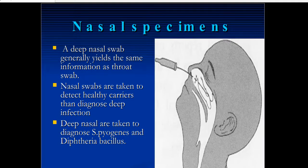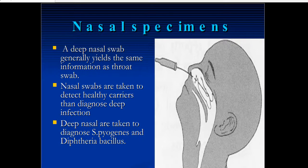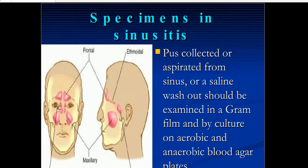For nasal specimens, a deep nasal swab generally yields the same information as a throat swab. Nasal swabs are taken to detect healthy carriers rather than diagnose deep infection. Deep nasal swabs are taken to diagnose some bacteria like diphtheria bacteria. Streptococcus pyogenes can also be detected by deep nasal swabs. Nasal swabs are used for identifying bacterial infections.